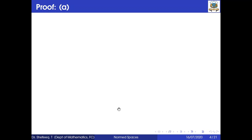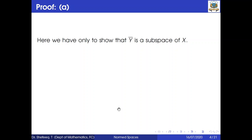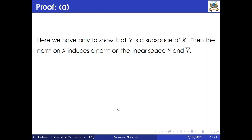Proof of part A. Given that Y is a subspace of the given normal space X, we have a norm on X. If we restrict this norm onto the subspace Y, then the norm on X induces a norm on that subspace Y.